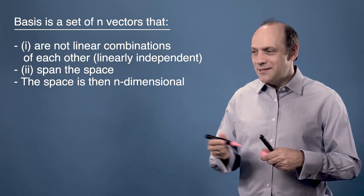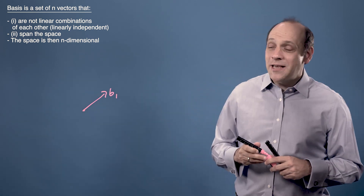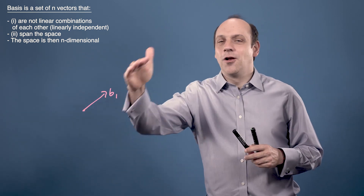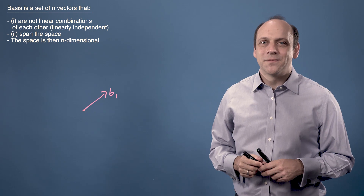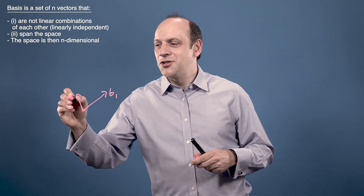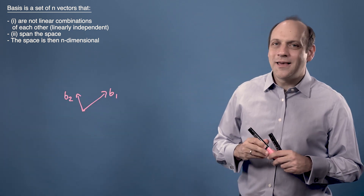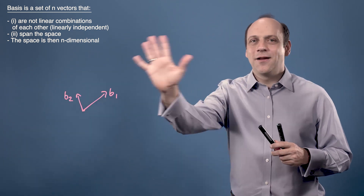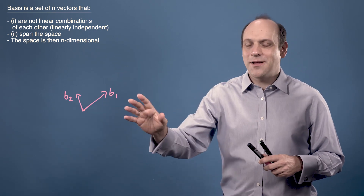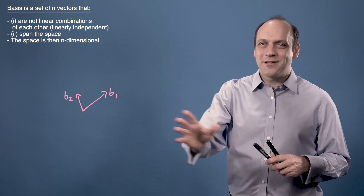For example, let's say I've got a vector B1. By taking multiples of B1, I can get anywhere along the 1D space of a line. If I take a second vector B2 that isn't just a multiple of B1, then I can get anywhere in the plane of this board by taking combinations of B1 and B2 — some number of B1s plus some number of B2s — and this is a 2D space.